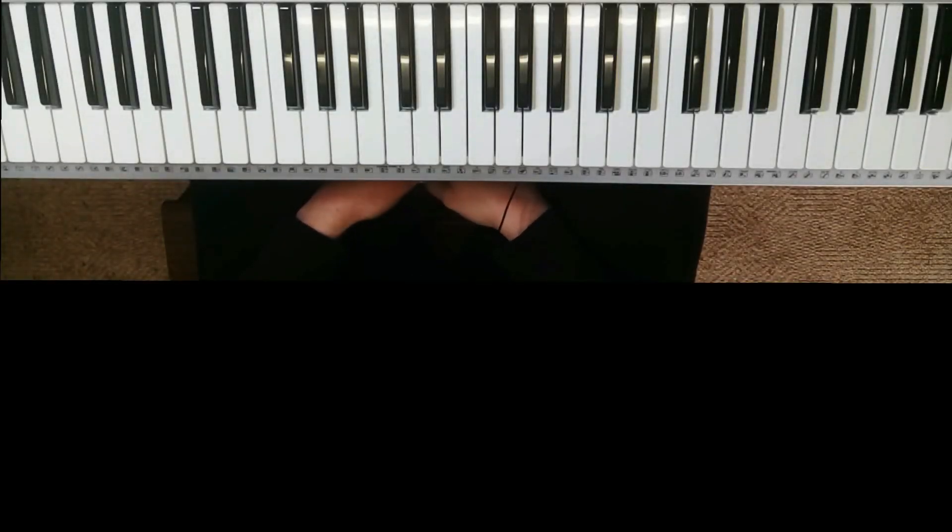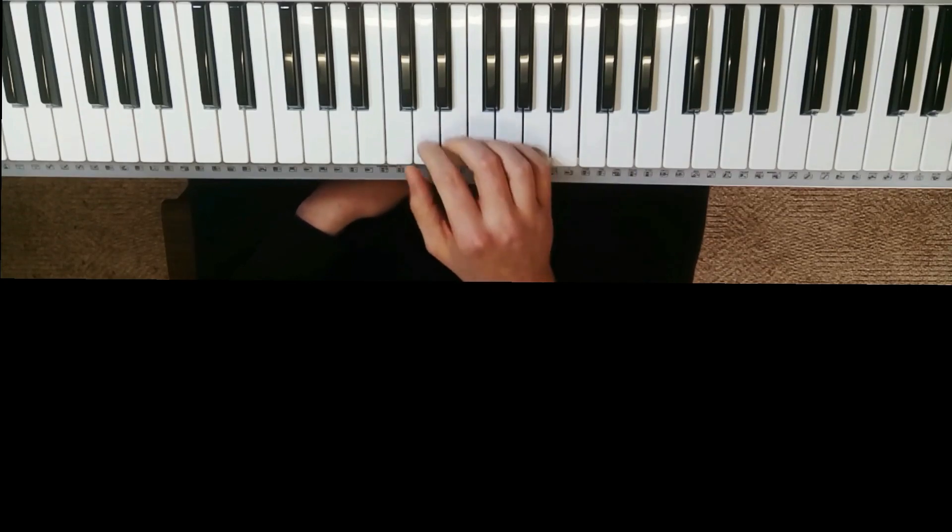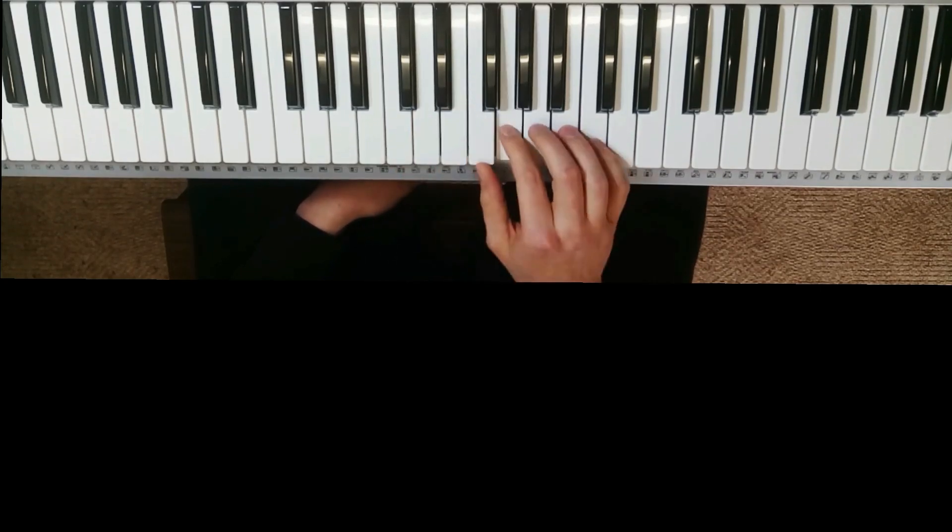Welcome back to the second video in my lesson on how to play piano for bass players. In this lesson, we're looking at the key of G major and the major 2-5-1 in that key. In the first lesson, we looked at C major, which was all the white notes from C to C.